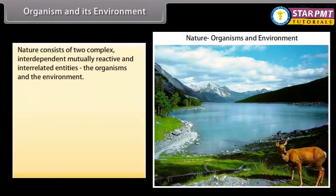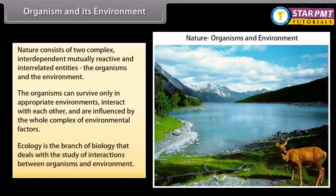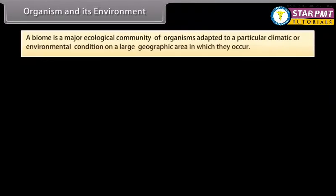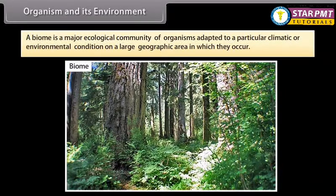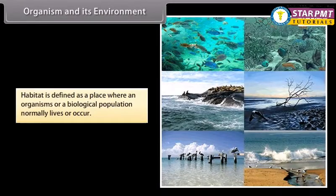Nature consists of two complex interdependent, mutually reactive and interrelated entities: the organisms and the environment. Organisms can survive only in appropriate environments, interact with each other, and are influenced by environmental factors. Ecology is the branch of biology that deals with the study of interactions between organisms and environment. A biome is a major ecological community of organisms adapted to a particular climatic and environmental condition on a large geographic area. Habitat is defined as a place where an organism or a biological population normally lives or occurs.